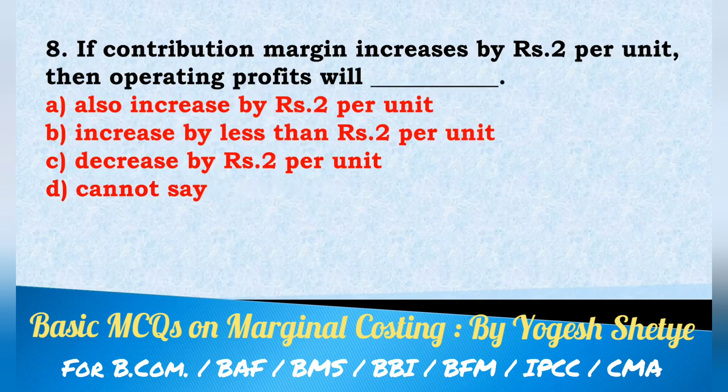Question 8: If contribution margin increases by Rs. 2 per unit, then operating profit will also increase by Rs. 2 per unit. Answer A.